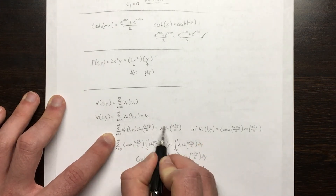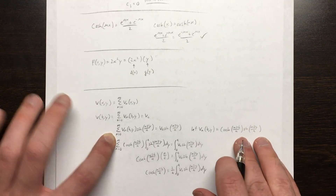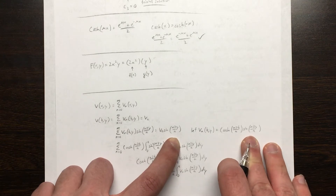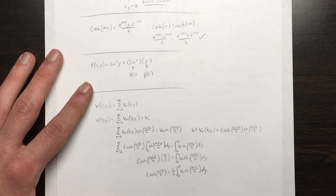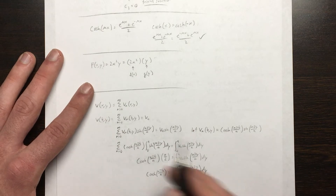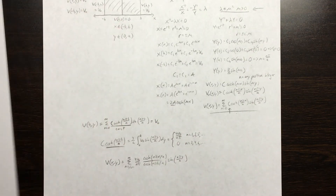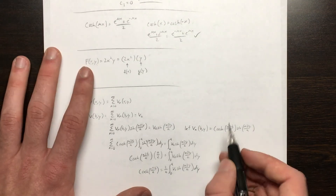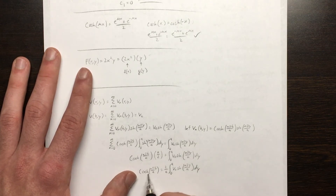We multiply both sides by the sine term and integrate both sides from 0 to a — our period defined from the boundary conditions for our rectangle. Integrating term-wise for the series, the integral of sine squared is a/2. Dividing both sides by a/2, we're left with the expression: C times the hyperbolic cosine of N·pi·b/a equals a constant, which we find by evaluating the integral on the right side.